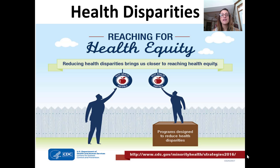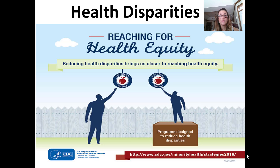Today we're going to focus on things that make us diverse and how our demographic information impacts our likelihood of how we're treated in healthcare, as well as some of our health outcomes, and try to understand why there might be some differences. We'll start by briefly talking about the film 'Unnatural Causes' that you watched for homework, and then talk about some of the health disparities we see in our nation.